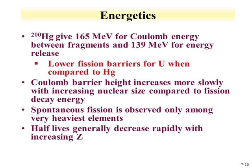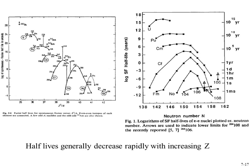The Coulomb barrier increases more slowly than the increasing fission energy as we go from mercury to uranium. Spontaneous fission is only observed among the heaviest elements because the barrier for spontaneous fission is lower generally. Spontaneous fission half-lives decrease rapidly with increasing Z. Plotting half-life versus Z²/A from thorium through uranium, plutonium, curium, californium, to element 104, we see a general decrease with increasing atomic number and mass.